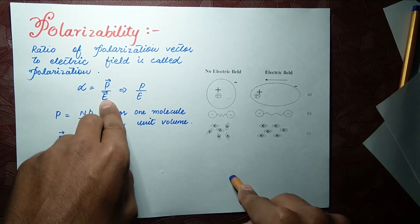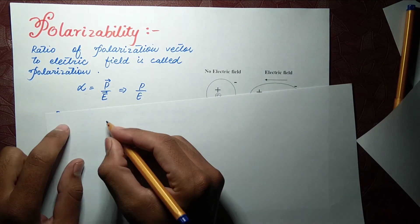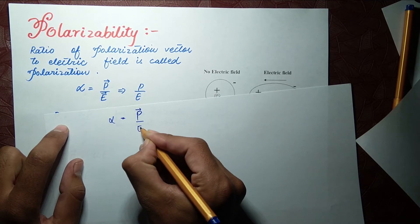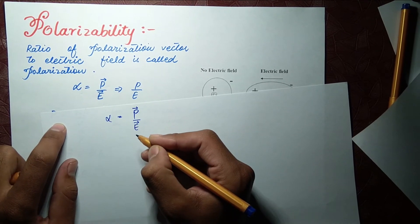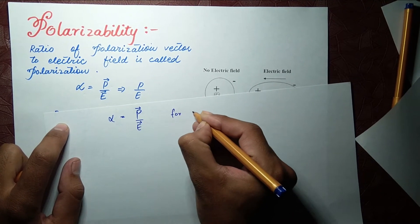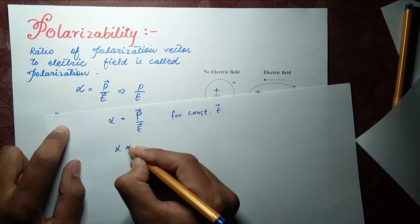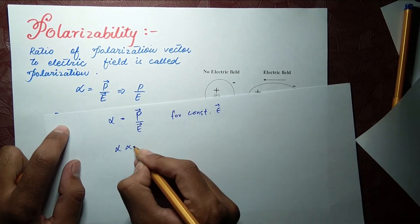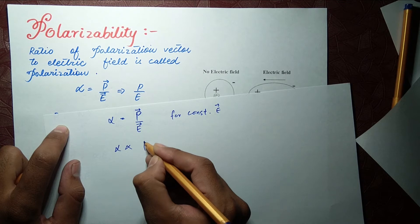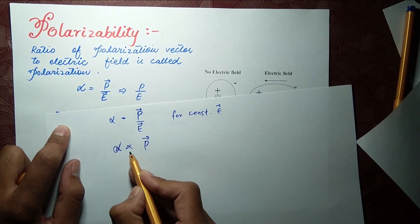So polarizability alpha is equal to P over E. For a constant electric field, alpha will be directly proportional to P — that is, alpha is directly proportional to the polarization P.